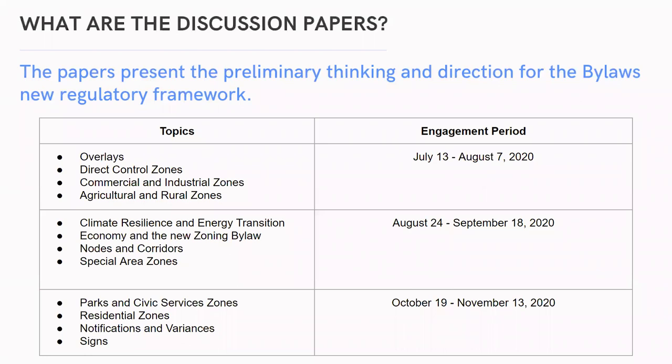So that finishes up the information on the impetus for the renewal and the ways in which the new bylaw will likely be different. To help residents explore the various aspects of zoning, the city has been releasing a series of discussion papers. These papers provide the preliminary thinking and direction for the bylaw's regulatory framework. The papers have been released in batches visible on your screen with the opportunity to provide feedback on the Engaged Edmonton platform. The EFCL did host a webinar for the second batch, which can be accessed on our YouTube page. For the first batch, we just put together some review materials which were sent out over email. On October 27th and 28th, we will also host webinars on the third batch.